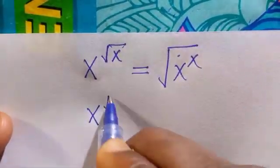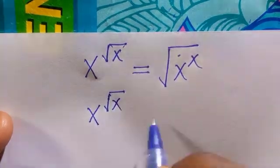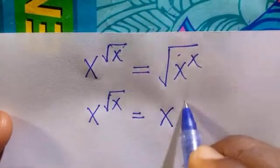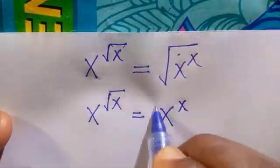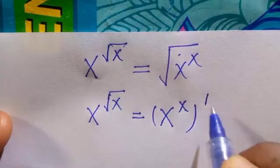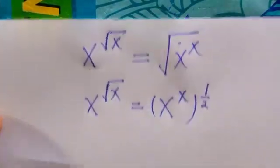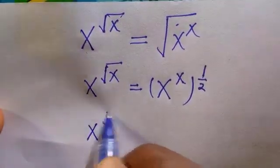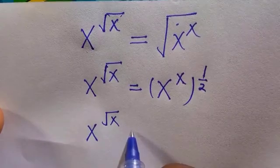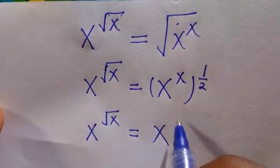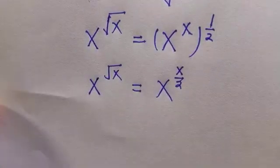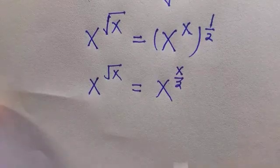We're going to apply this method. We have x raised to power root x equals root x raised to power x. Then everything is to the power of 1 divided by 2, as the value of root is 1 over 2. So here is x raised to power root x equals x raised to power of x divided by 2.